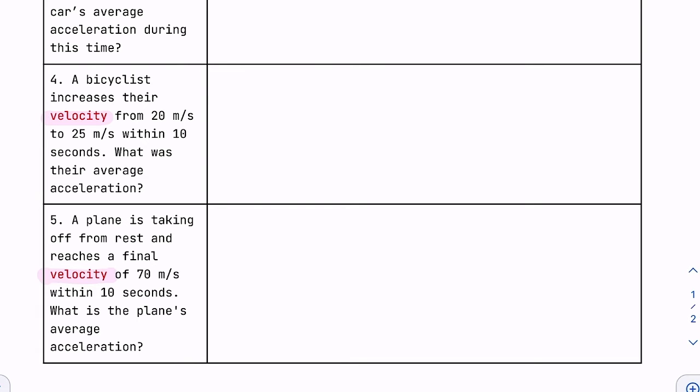So our givens: we are told a final velocity of 70 meters per second, the time of 10 seconds, and we're looking for average acceleration. There's one more bit of information that's given to us, but it's not totally obvious. And that would be a plane is taking off from rest. That means that initially our plane is stopped.